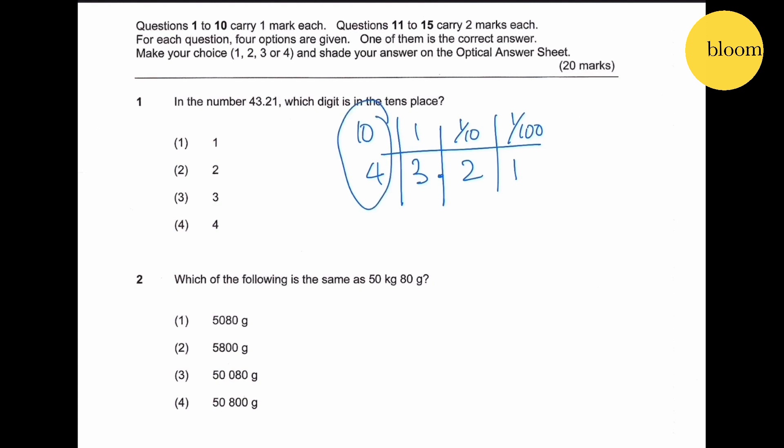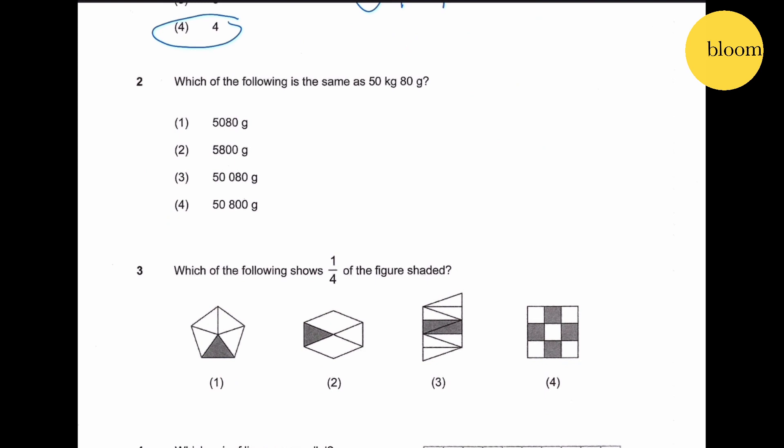Question two: which of the following is the same as 50 kilogram 80 gram? 50 kilogram equals 50,000 gram, therefore 50 kg plus 80 gram equals 50,080 gram. Answer is number three.